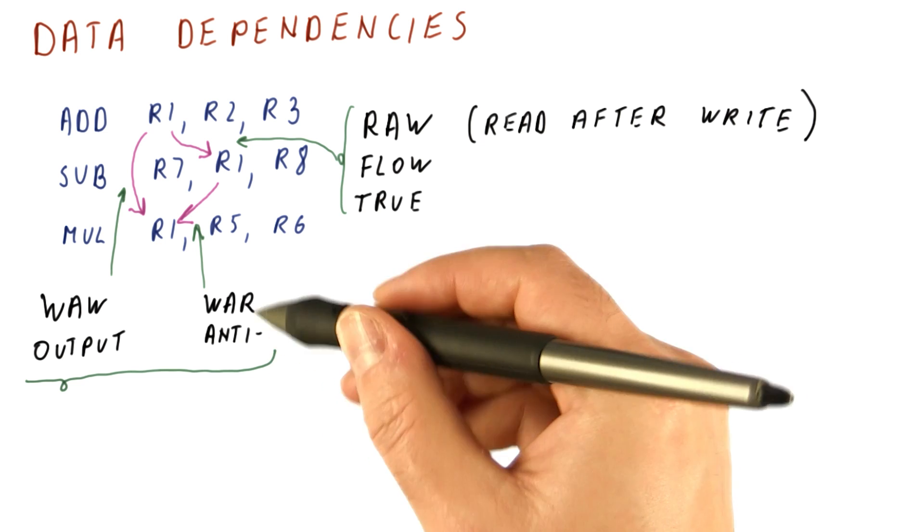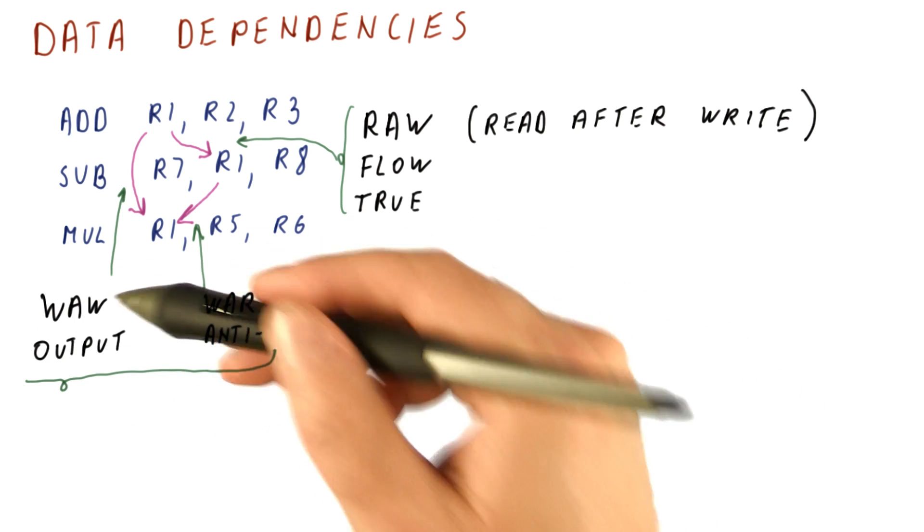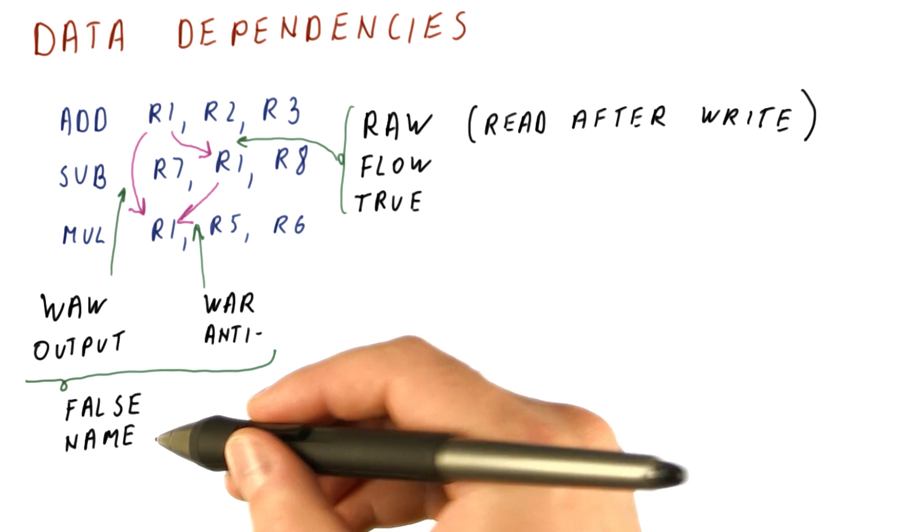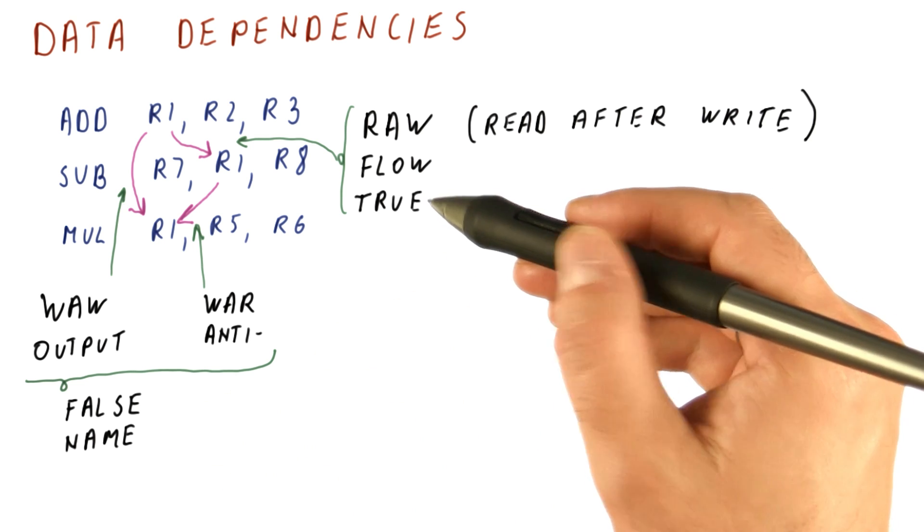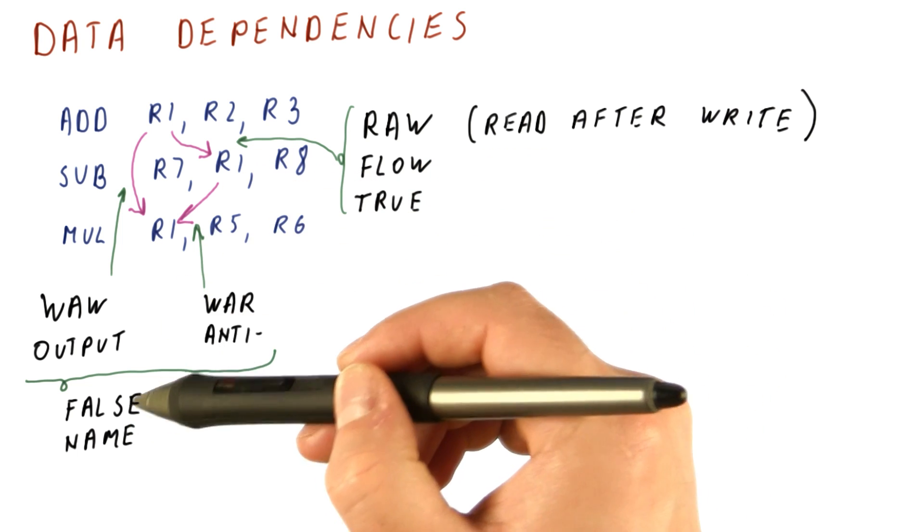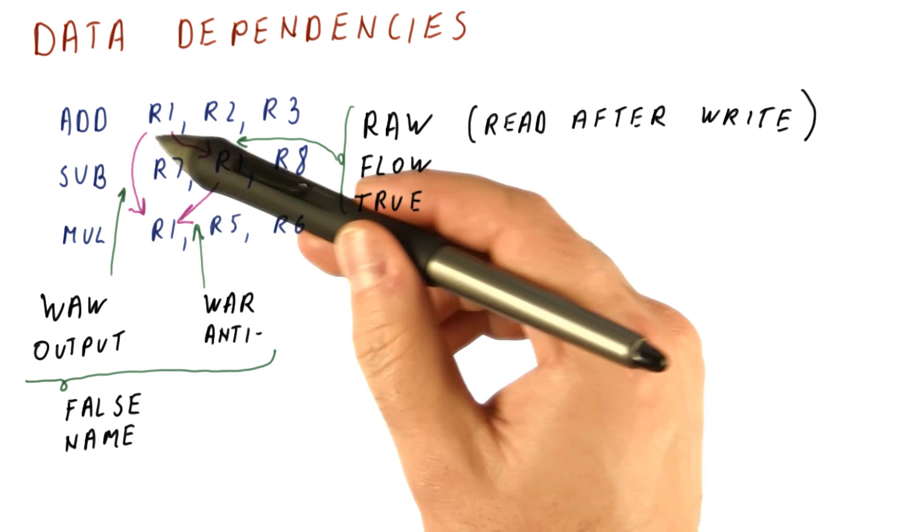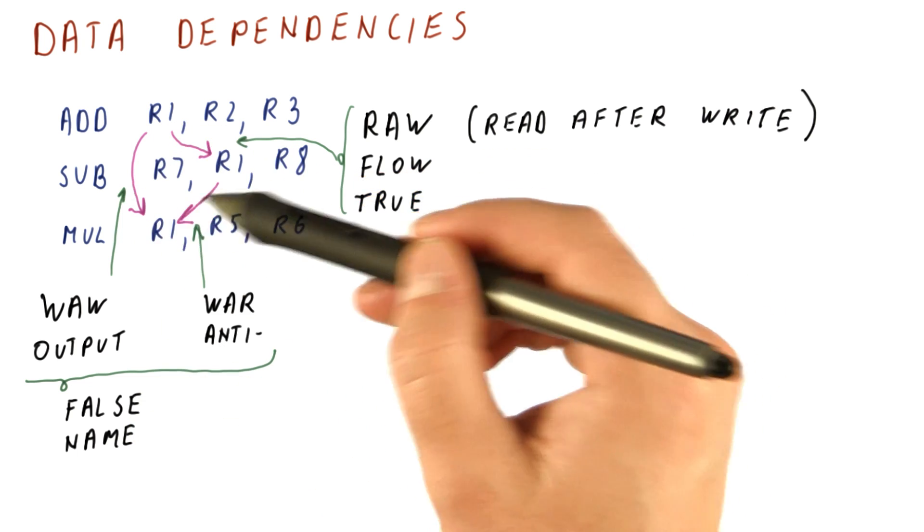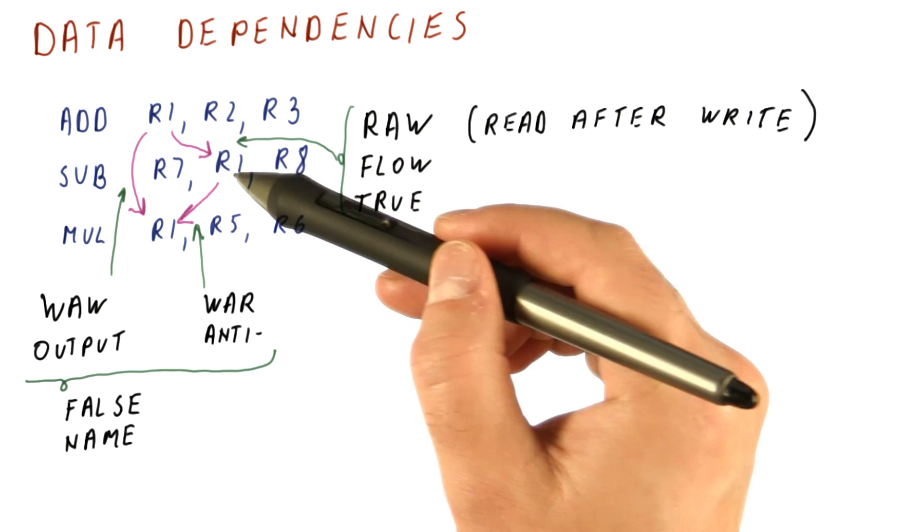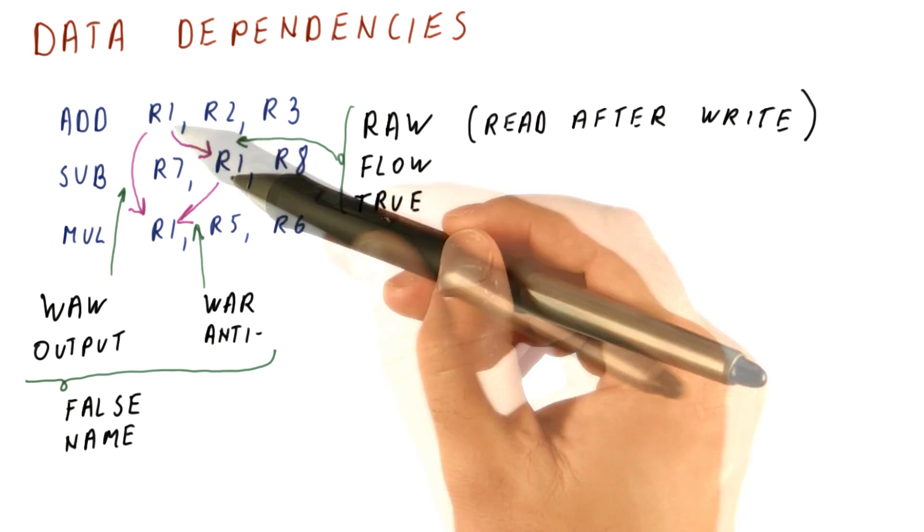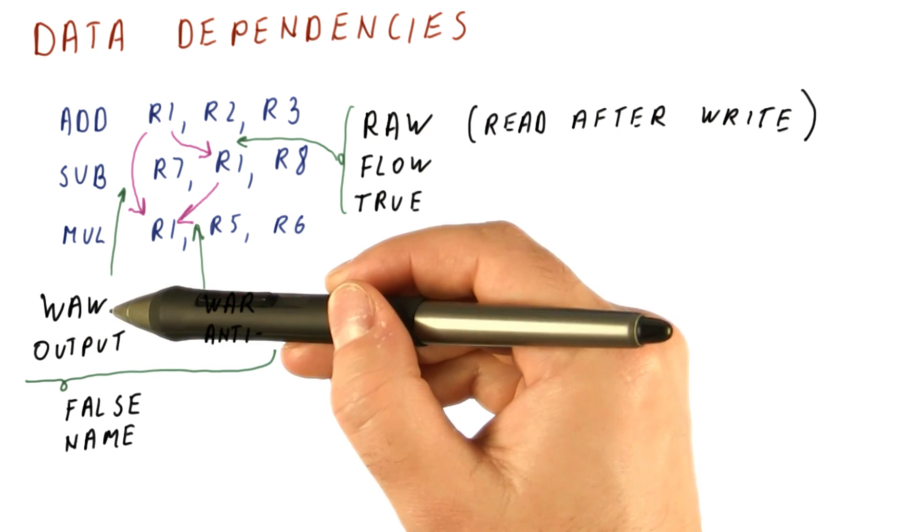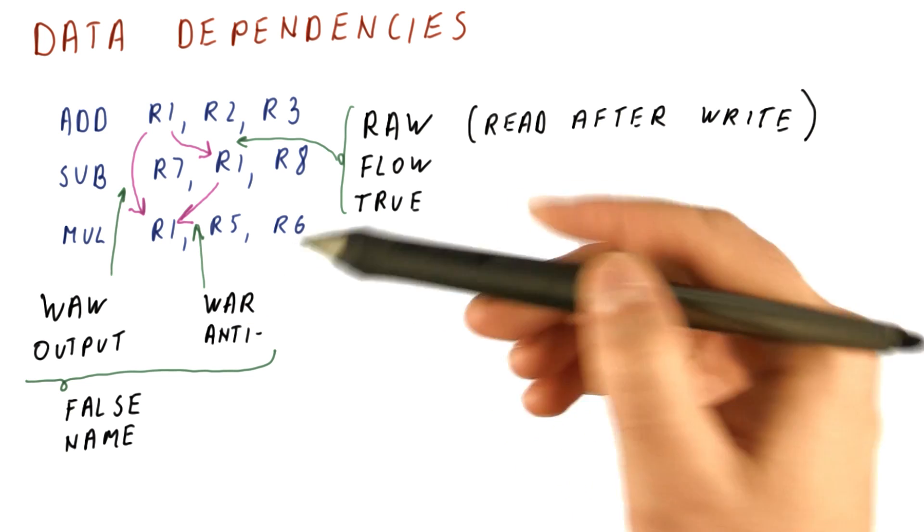For reasons we will see later, these two types of dependencies are called false or name dependencies. So we have true dependencies, which are these RAW dependencies or flow dependencies, and we have false or name dependencies that have to do with overwriting a value that somebody has written or read previously, or at least should read or write previously. Now, we have a read after write, write after write, and write after read dependence.